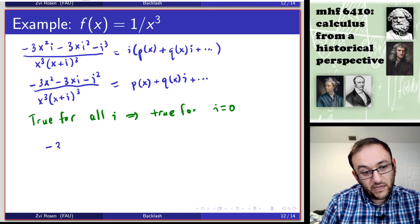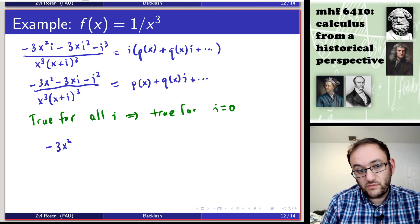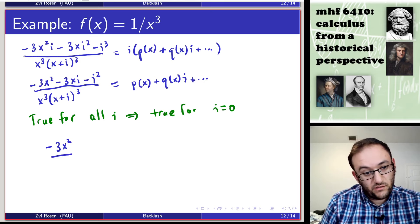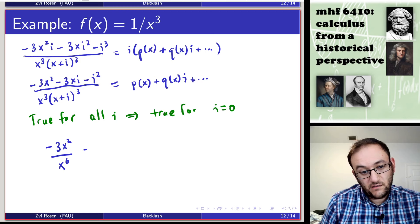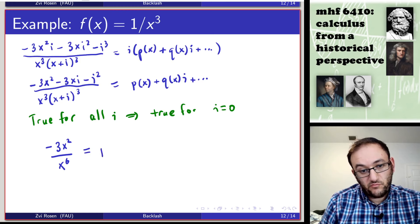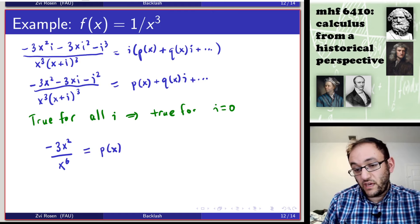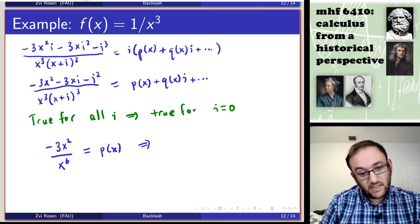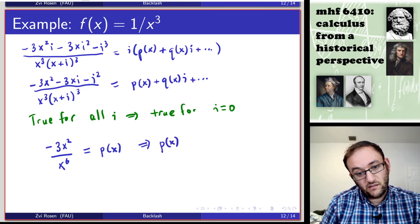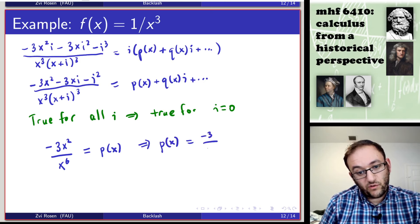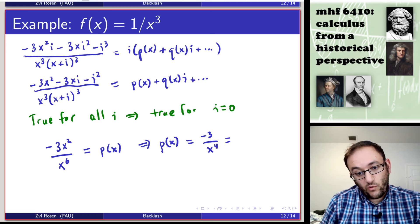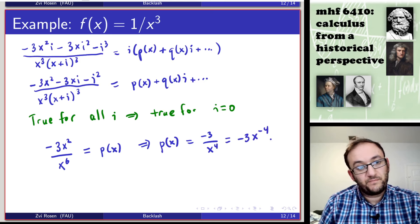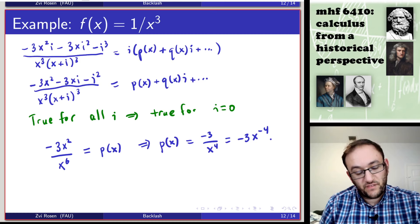We get minus 3x squared, the other terms vanish on top, divided by x cubed times x cubed, so over x to the sixth, is equal to p of x. And then the subsequent terms, all being multiplied by zero, vanish. And that tells us that p of x is equal to minus 3 over x to the fourth, or minus 3x to the minus four, which is exactly what you would expect from the power rule of calculus, of differentiation.